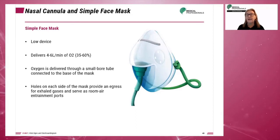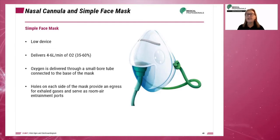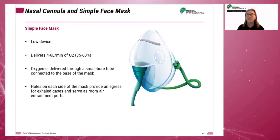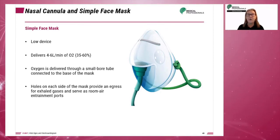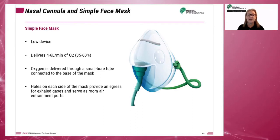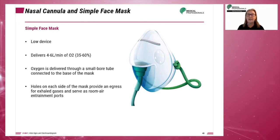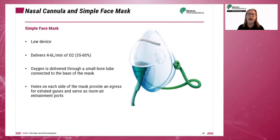Another low flow device is the simple face mask. Oxygen is delivered through a small bore tube connected to the base of the mask. Holes on each side provide access for exhaled gases and serve to mix room air with the oxygen supply. The face mask can be used to deliver oxygen rates of 4 to 6 liters per minute, which is 35 to 60 percent oxygen concentration. Low flow devices require oxygen flow rates less than 5 liters per minute and are used for short-term oxygen therapy.